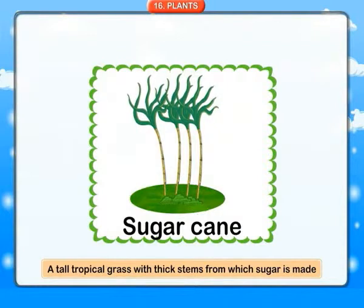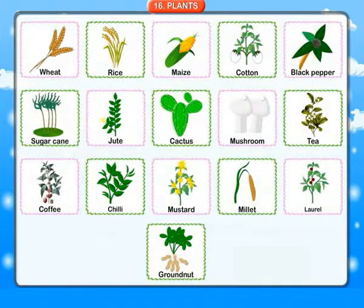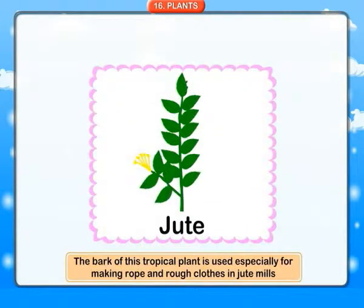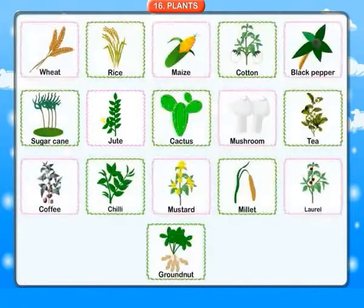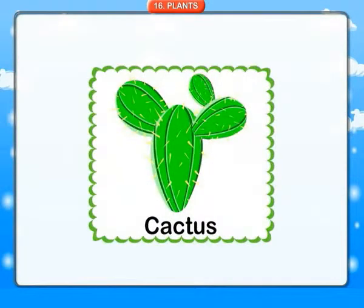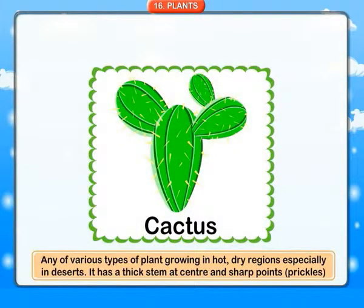Sugar cane: a tall tropical grass with thick stems from which sugar is made. Jute: the bark of this tropical plant is used specially for making rope and rough clothes in jute mills. Cactus: any of various types of plant growing in hot, dry regions, specially in deserts.